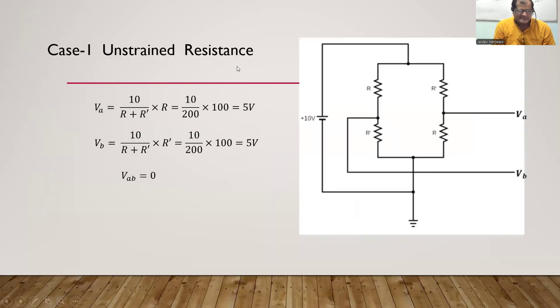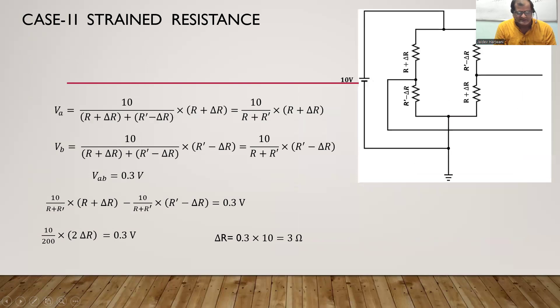In the first case when resistances are unstrained, we can redraw the circuit such as like this. This 10 volt is applied across R and R', both are same, so Vab is zero in the unstrained case.